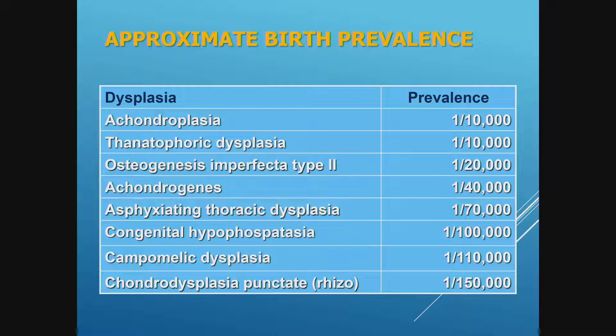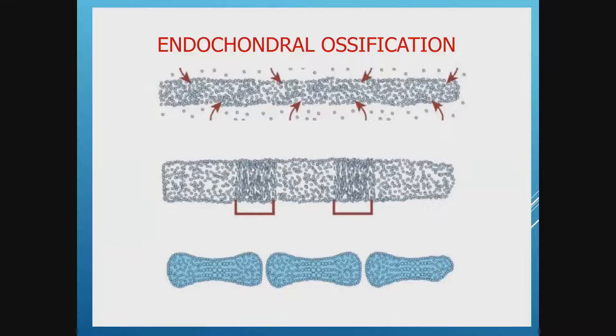If we look at the birth prevalence of different skeletal dysplasias, the most common — though not very common — is 1 in 10,000, which is achondroplasia or thanatophoric dysplasia, down to the rare chondrodysplasia punctata at 1 in 150,000. Everyone will find a skeletal dysplasia at some time in their career. Achondroplasia is one we'll miss more commonly because it may not show up very early, and molecular diagnosis may be what points us to look earlier in the pregnancy.